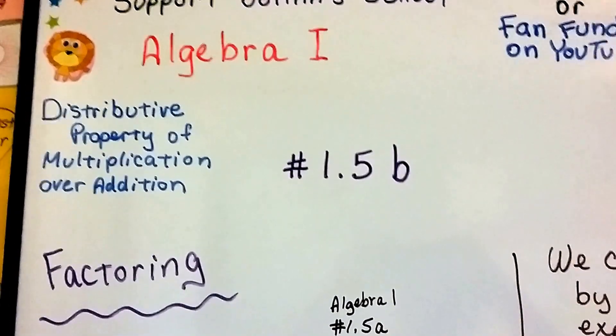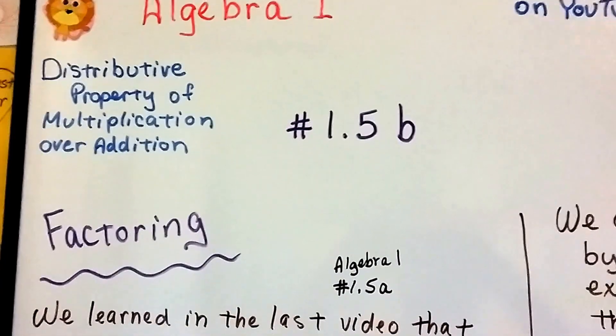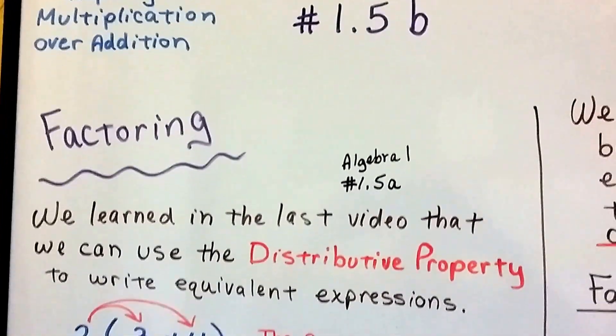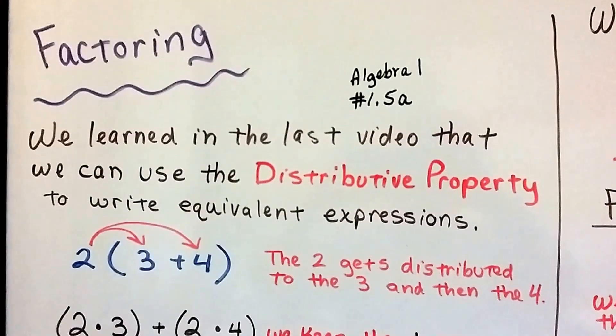Algebra 1, number 1.5b. We've been talking about the distributive property. Now we're going to talk about factoring and using the distributive property.